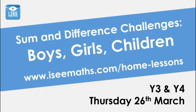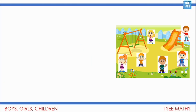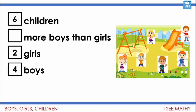Today's lesson is called 'Boys, Girls and Children' and we're going to use sum and difference skills to find answers, representing questions in lots of ways — with equipment and pictures. Here's a picture of some children at a park: 6 children, 2 girls and 4 boys. I can represent this with counters — green circles for the 4 boys, orange circles for the 2 girls. We can see clearly that there are 2 more boys than girls.